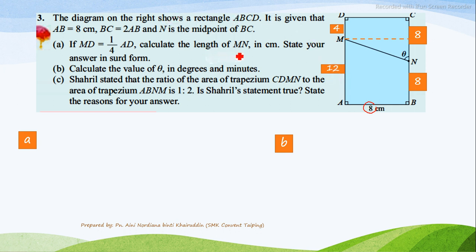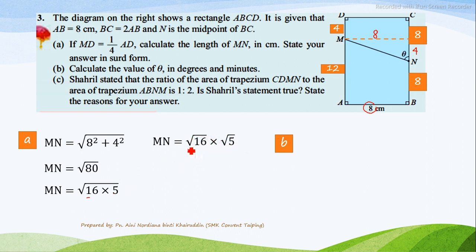Calculate the length of MN in cm. State your answer in surd form. So this is MN. We use Pythagoras theorem to calculate the length of MN. This is 8. Since this is 4, so here is 4. So 8 squared plus 4 squared equals to square root 80. Next, 80 is actually 16 times 5. Then separate these two. It becomes square root of 16 times square root of 5. Square root of 16 is 4 times square root of 5. So final answer, 4 square root of 5 cm.